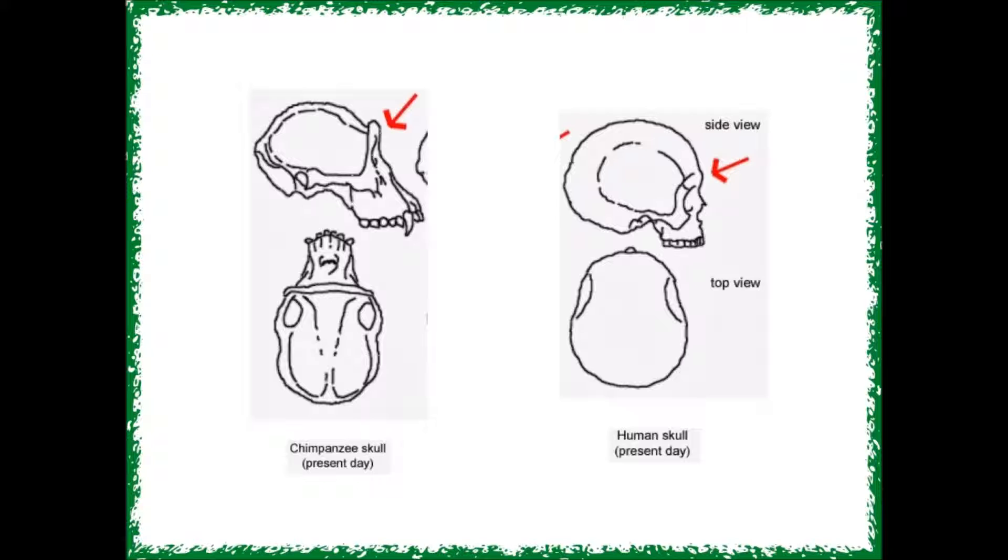Look at the skulls in this picture. The chimpanzee skull stays small because it has a larger jaw to support. The human skull is larger, though, because the human jaw is smaller. The extra room gave space for the front part of the brain to grow bigger.